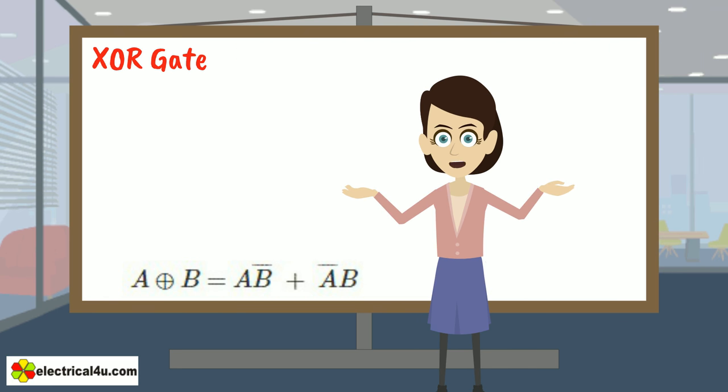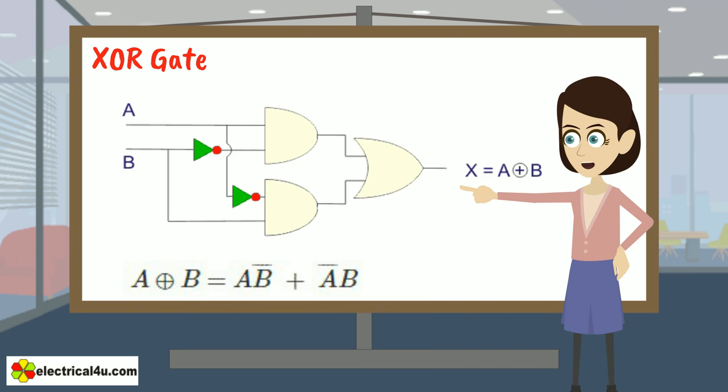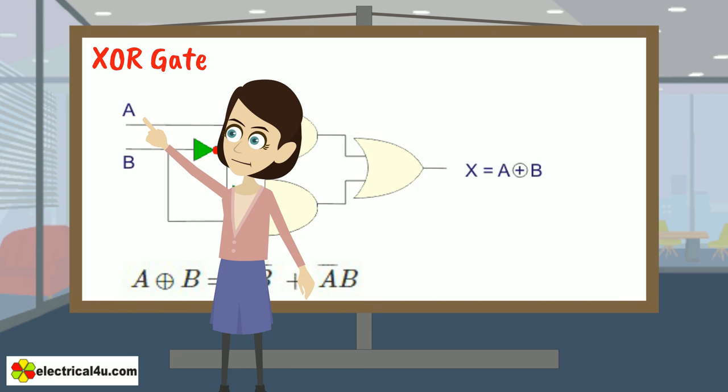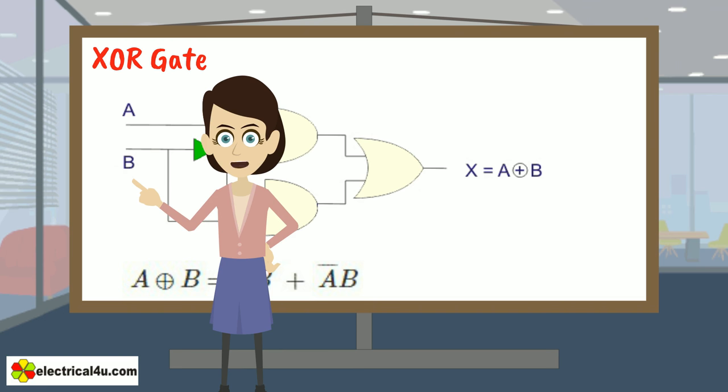one can easily realize the logical circuit of an XOR gate and this will be as shown. Here, A and B are input at this logic circuit.